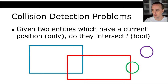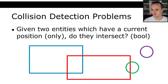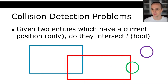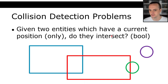The problem we're going to be dealing with in this course involves two sub-problems. First, given two entities which have a current position only, do they intersect? We will not be doing circle-rectangle collisions in this course. We have already done circle-circle collisions with assignment two, and in this lecture we're going to be talking about rectangle-rectangle collisions.